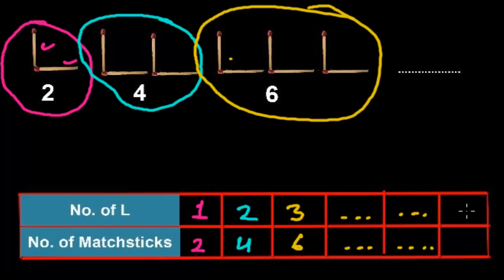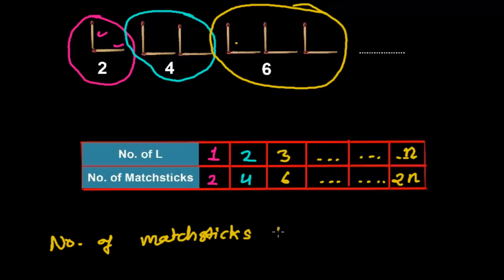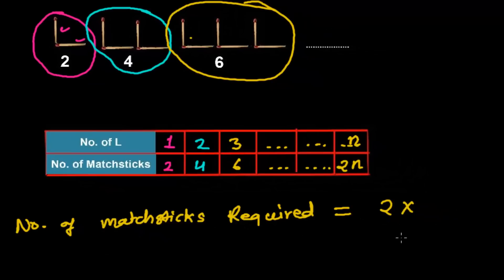Let's try to see the relationship here. If I'm writing here 1, I'm writing here 2 matchsticks. If I need 2 L's, I need 4 matchsticks. If I need 3 L's, I need 6 matchsticks. In the same way, if I need any number, I just have to multiply that number by 2. So if I need N number of L's, then the total matchsticks required will be 2 times N.